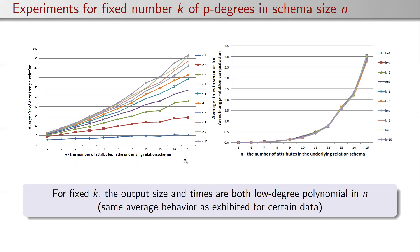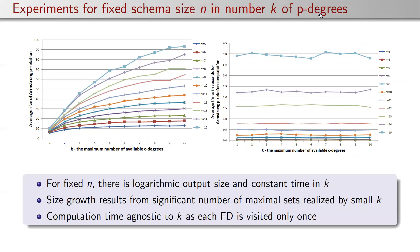We generated these relations on average across different numbers of attributes and different numbers of available possibility degrees from k=1 to k=10. When fixing the number of available possibility degrees, the output size and computation times are both low-degree polynomial in the number of attributes — the same average behavior as for certain data. When fixing the schema size and varying k, the output size is logarithmic and computation time is essentially constant in k. This is because a significant number of maximal sets are already realized by small k, and computation time is agnostic to k since each functional dependency is visited exactly once.